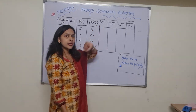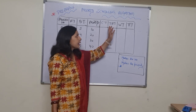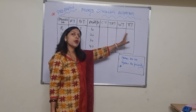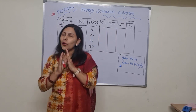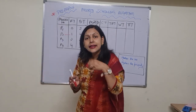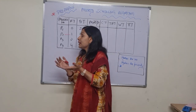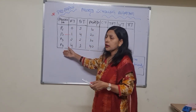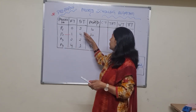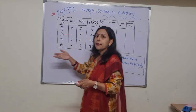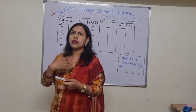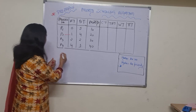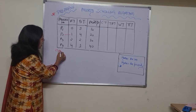We need to find out the completion time, turnaround time, waiting time, and response time. This can only be done by creating the Gantt chart. We have four processes, and according to priority we need to check which process gets the CPU allotted first.